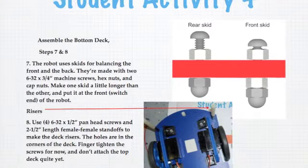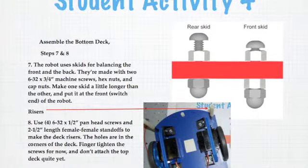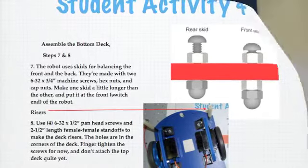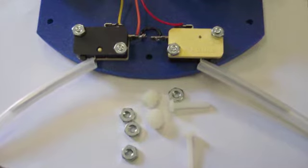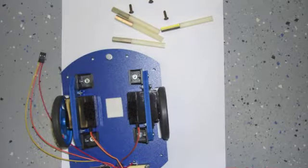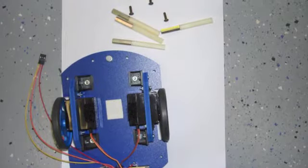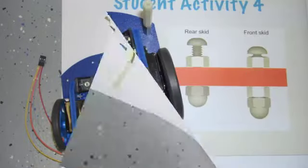In student activity four, they get to install and adjust the front and rear skids using the acorn nuts and the screws. In addition to that, they'll install the risers to the bottom deck, and it should look something like this when finished.